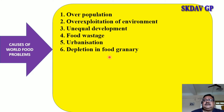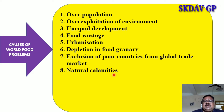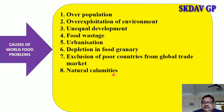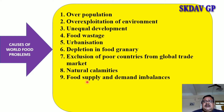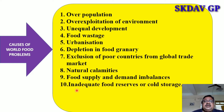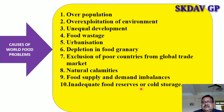Exclusion of poor countries from the global trade market is another cause. Then, natural calamities like floods, drought, and forest fires are also causes of world food problems. Food supply and demand imbalances — the supply and demand are not in balance. Inadequate food reserves or cold storage — cold storage and food reserves are very limited, so food is wasted.